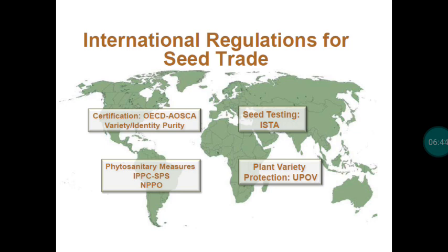For phytosanitary requirements, we must obtain a phytosanitary certificate, which is taken care of by IPPC, SPS, and NPBO. The International Seed Testing Association (ISTA) is responsible for checking seed quality — they are not a certification agency but develop testing protocols and methodology, and issue ISTA certificates that are useful for moving seed from one country to another.